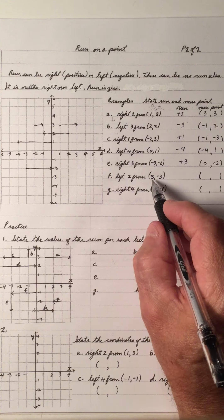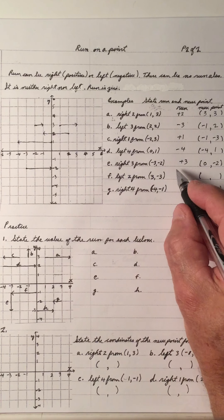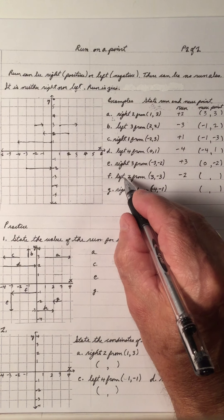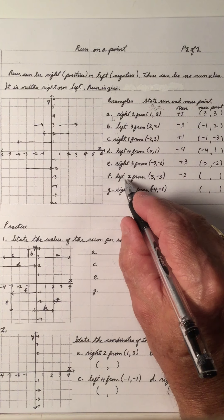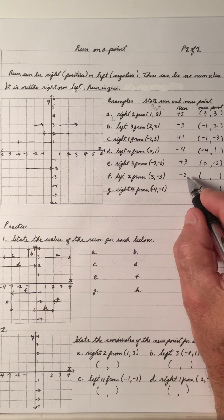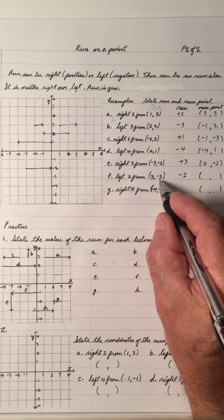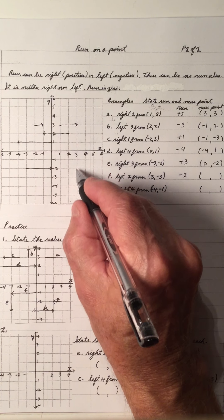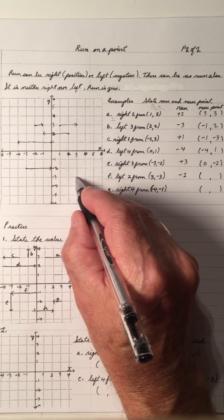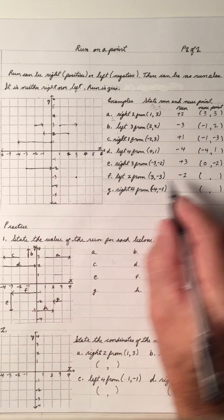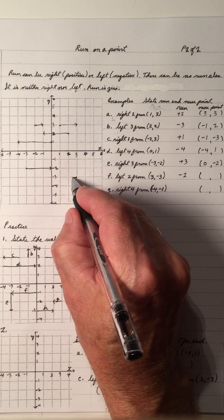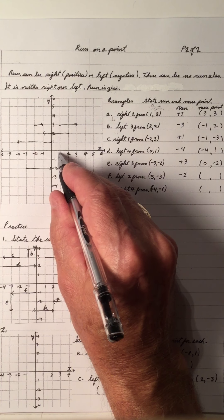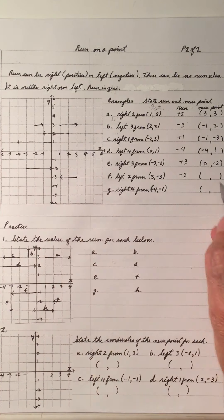Left three from the point (3, -3). Left three means a minus three. Actually, left two is negative two. So let's plot the point (3, -3): x is three, y is negative three. And we're going left two — one, two. So this point is x is one, y is negative three.